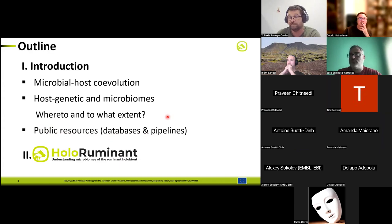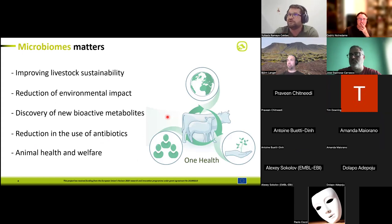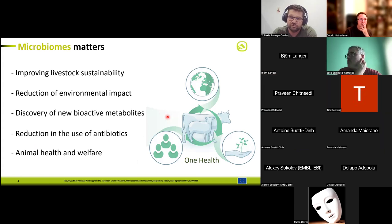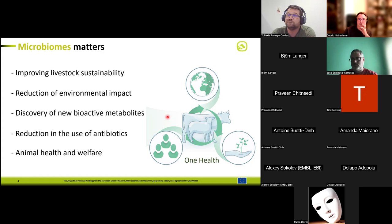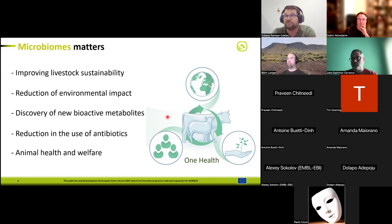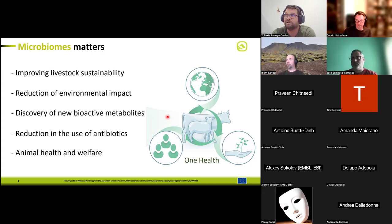Why are we interested in the microbiome in the first place? There is a growing interest in the use of microbial information in human, plant, environmental, and animal science. We know from scientific evidence that the microbiome is an important component that may help improve livestock sustainability — for instance, by reducing environmental impacts, discovering new bioactive metabolites as alternatives to antibiotics, addressing antibiotic-resistant genes, and improving animal health and welfare. From a One Health perspective, this also positively impacts human health and environmental science.